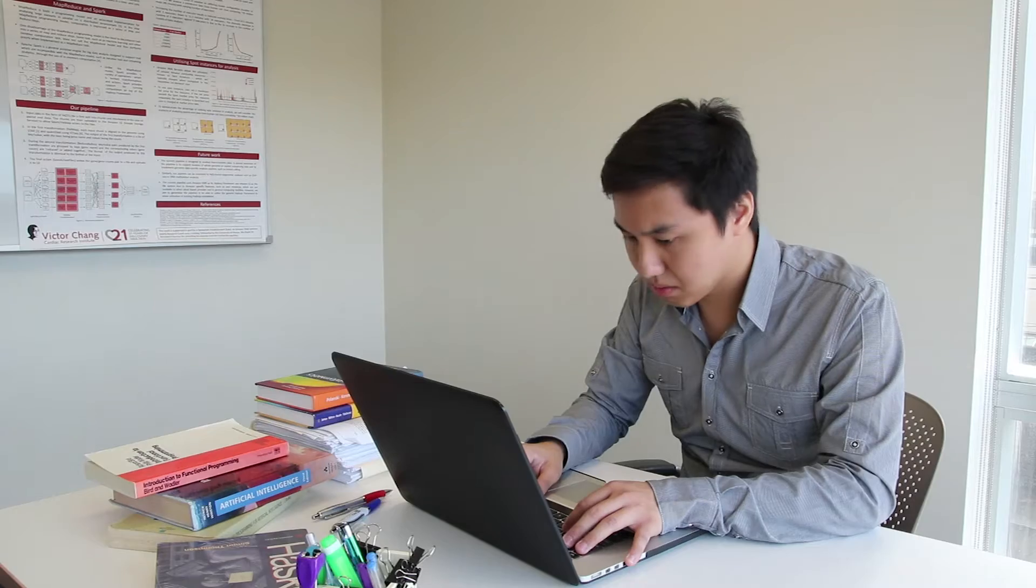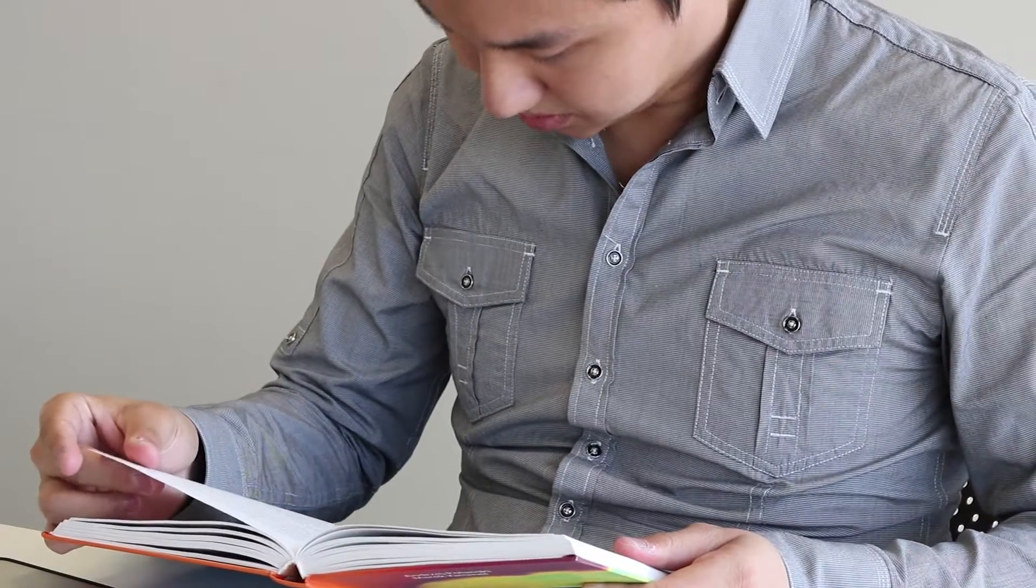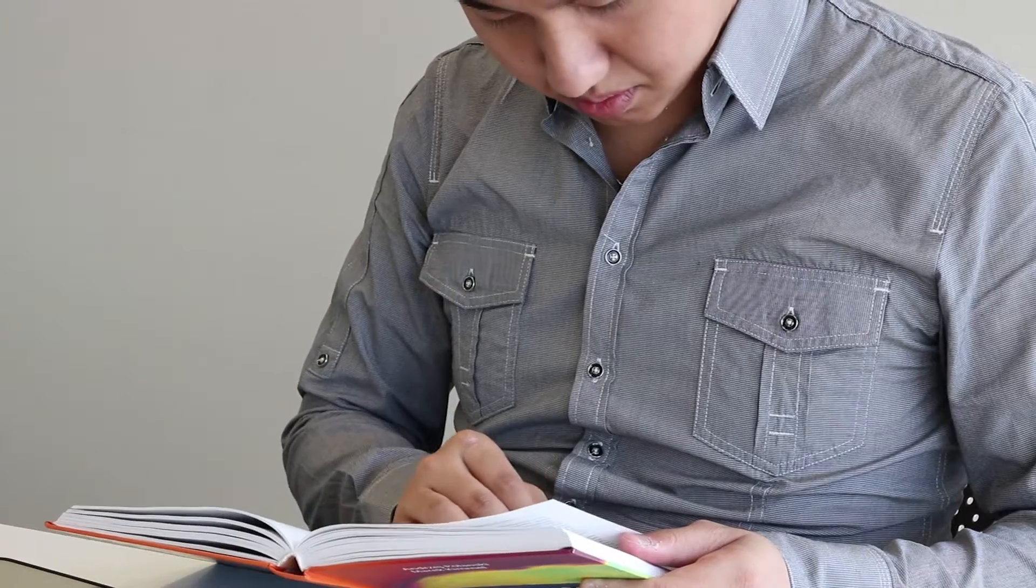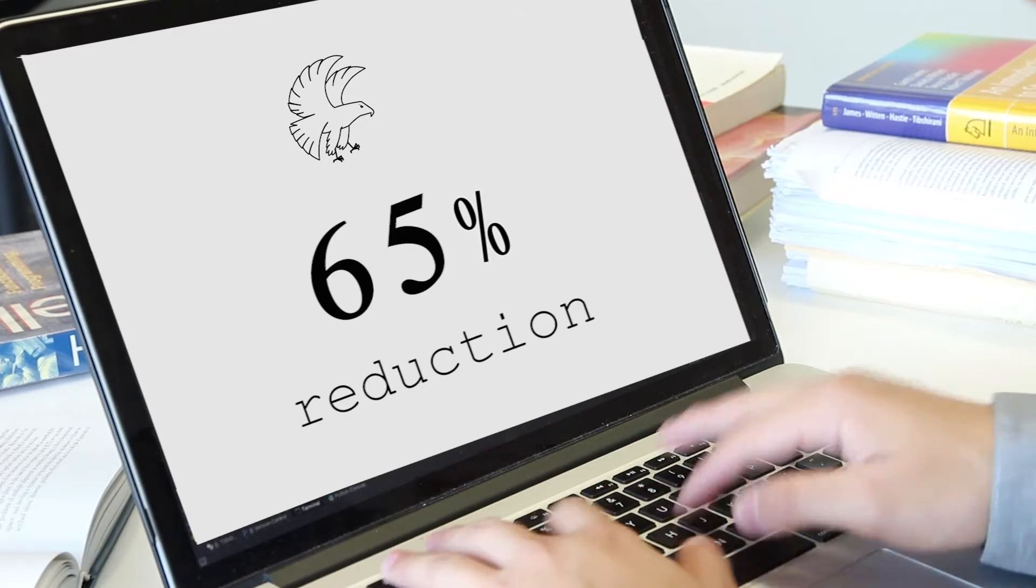Using Falco, you can cut down analysis which took 13 hours down to just one hour. On top of that, Falco also allows you to save money by utilizing the Amazon Web Services spot instances, and in fact we see about a 65% reduction overall in our analysis costs.